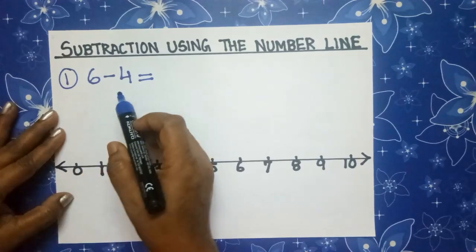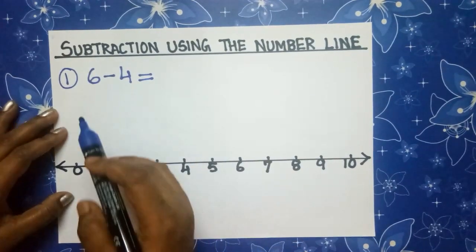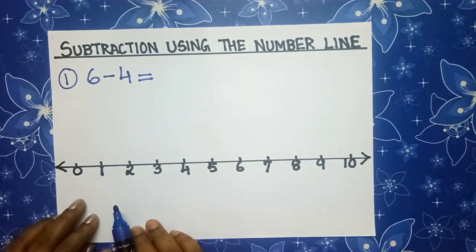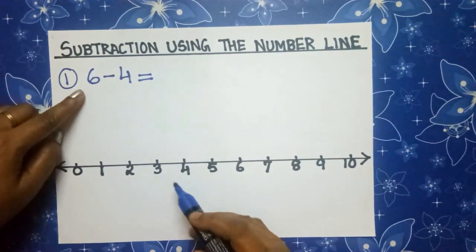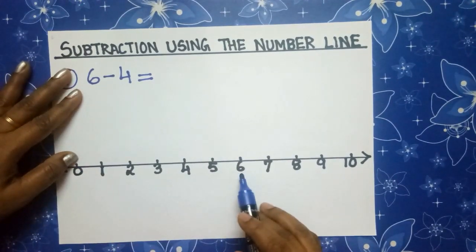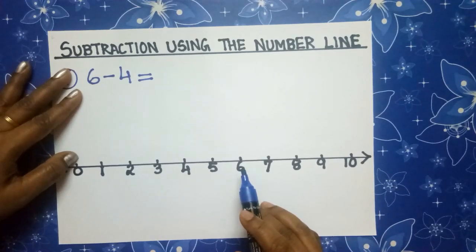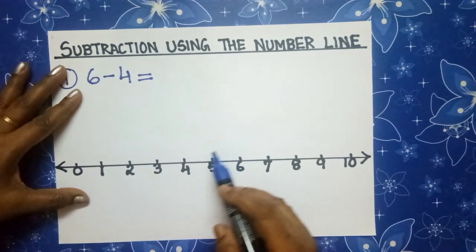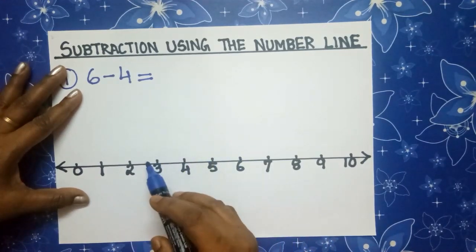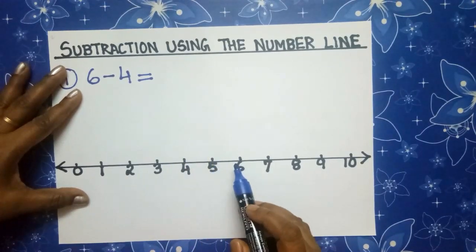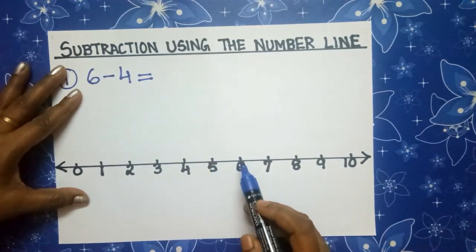6 minus 4. What is 6 minus 4? Using the number line, what we do is take the first number. What is the first number? 6. Find it in the number line. We are subtracting, so we have to go backwards. If there was a plus sign, we go forward. But because it is minus, we have to go backwards.